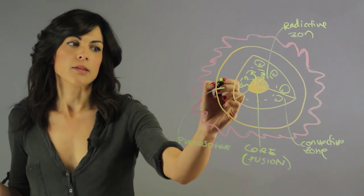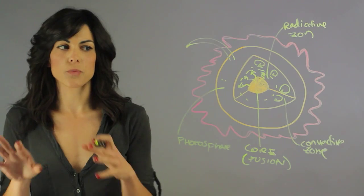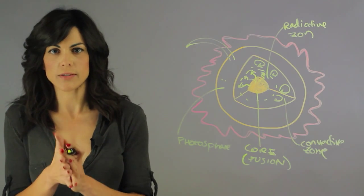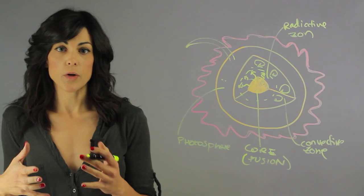This is where you see the sunspots, this is where you get all the flares, this is really the surface of the Sun. And then after that you have the chromosphere,